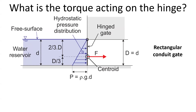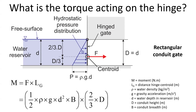We can then calculate the moment about the axis, or torque, acting on the hinge. The torque equals the hydrostatic pressure force times the distance from the hinge to the centroid of the pressure distribution. For a triangular distribution, the centroid is at two-thirds of the height of the gate. Thus the moment about the axis is half of rho g d squared times B times two-thirds of the height of the gate.